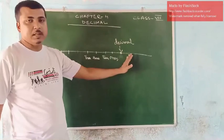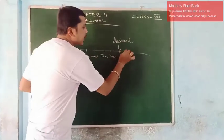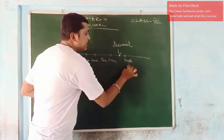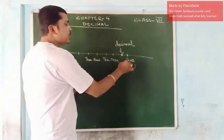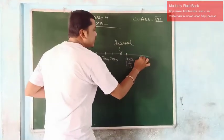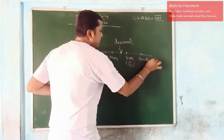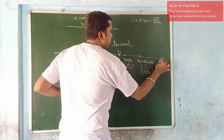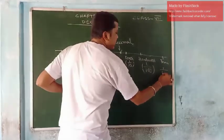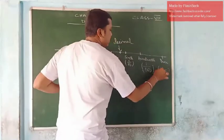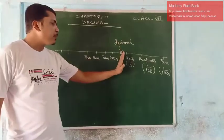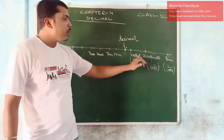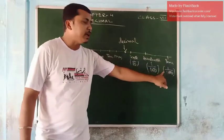What will be the place after the decimal? The first place after decimal is called tenths, and its value is represented as 1 by 10. Next, after tenths, it is hundredths, written as 1 by 100. Next, thousandths, represented as 1 by 1000. So before decimal we have ones, tens, hundreds, thousands, ten thousands. And after decimal: tenths (1/10), hundredths (1/100), thousandths (1/1000).